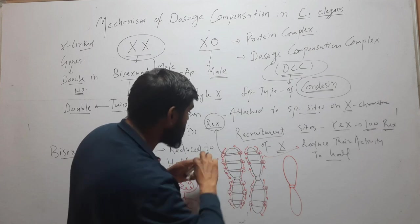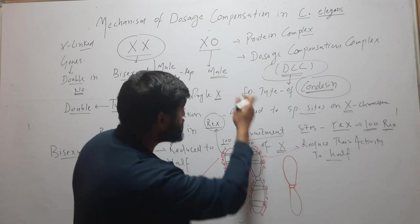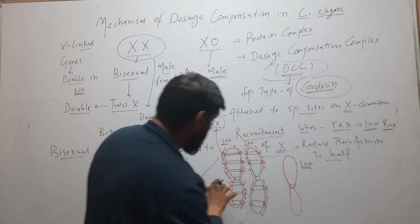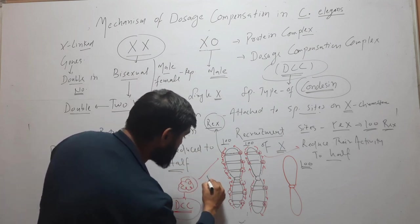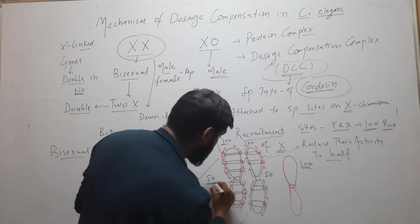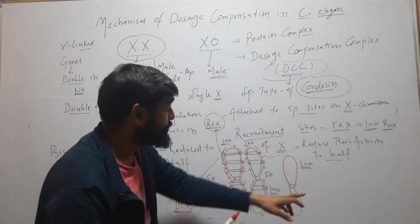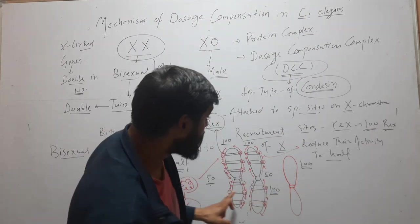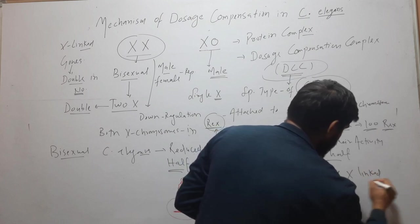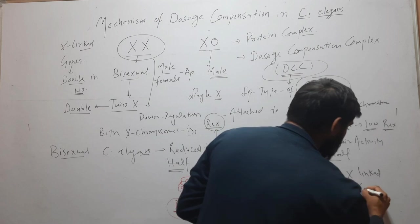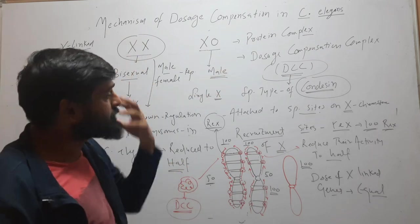Both X chromosomes of the bisexual organism are now covered by the DCC. This DCC down-regulates both chromosomes, reducing their activity to half. For example, if each X chromosome is making one hundred proteins, the DCC reduces each to fifty. So fifty plus fifty equals one hundred — equal to the male's single X chromosome making one hundred proteins without DCC.